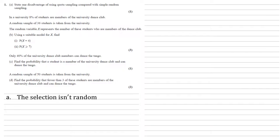In a university, 8% of students are members of the university dance club. A random sample of 36 students is taken from the university. The random variable X represents the number of these students who are members of the dance club.